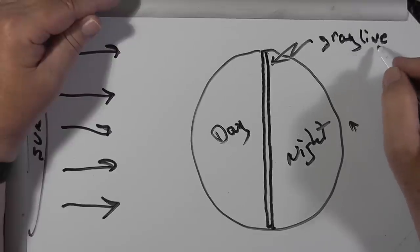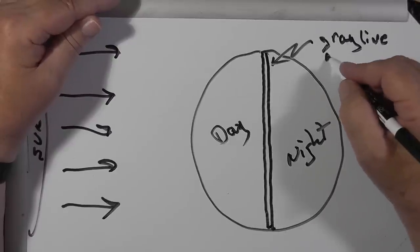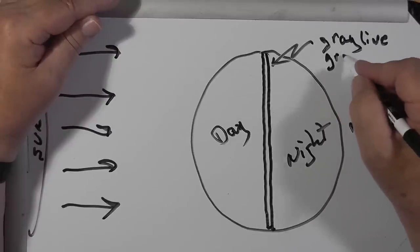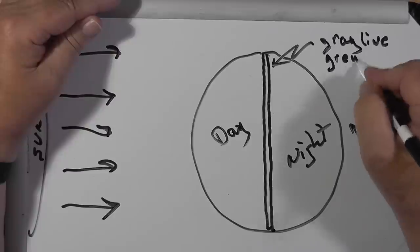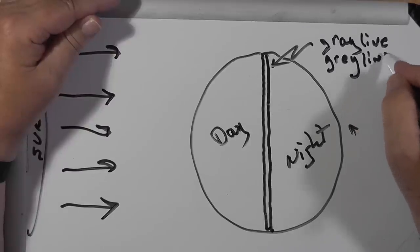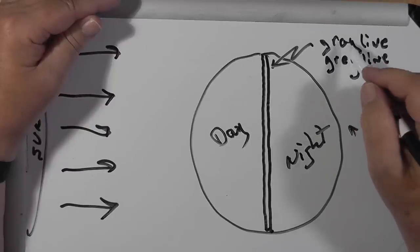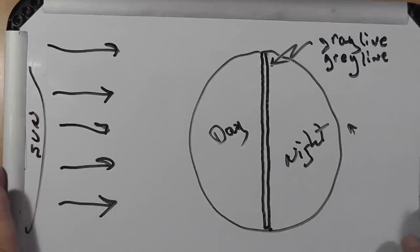If you live in the United States, it's the gray line. If you live in Great Britain, it's called the grey line. G-R-E-Y is the British spelling; G-R-A-Y is the American spelling. Now that we've got that important thing out of the way, let's look at some things.